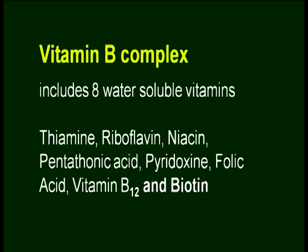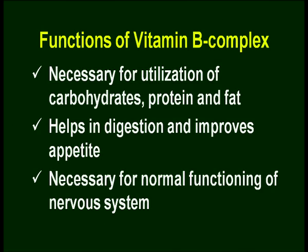Now we will understand about vitamin B complex. When we use the word vitamin B complex, it includes 8 water-soluble vitamins: thiamine, riboflavin, niacin, pantothenic acid, pyridoxine, folic acid, vitamin B12, and biotin. Sometimes they are also known as vitamin B1, B2, B3, B5, B6, B9, B12, and biotin. All 8 vitamins are required because they participate in the utilization of carbohydrate, protein, and fat at different metabolic cycles in the body.